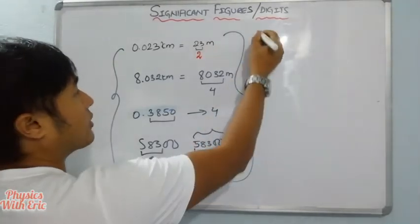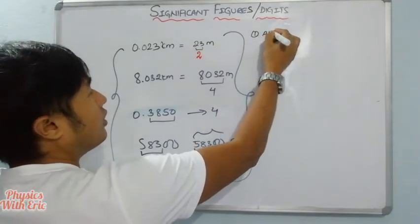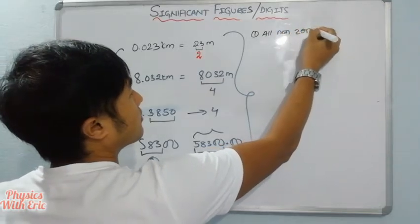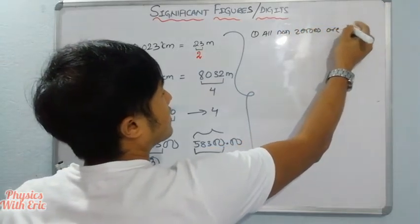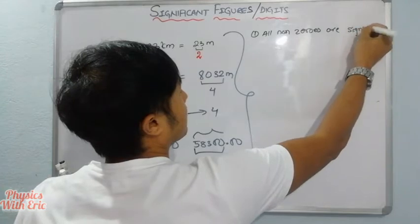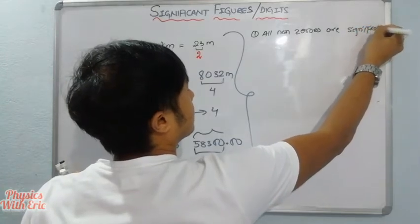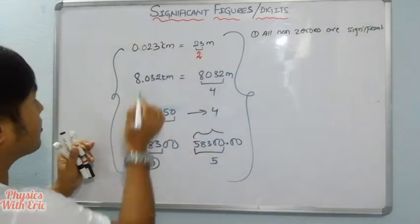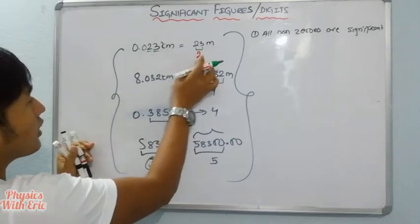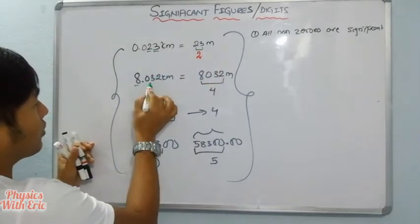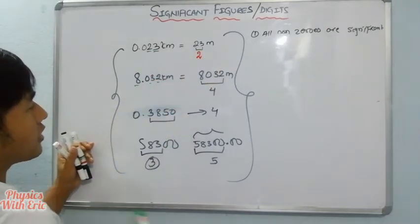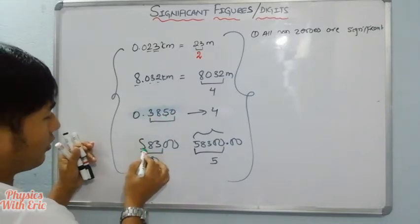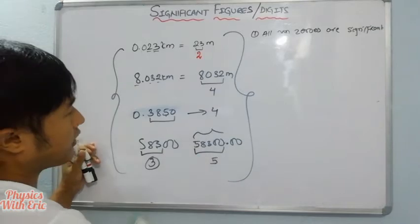Number one rule: all non-zero digits are significant. Non-zero is significant. Why is zero significant? That depends on its position, which is what the other rules explain.